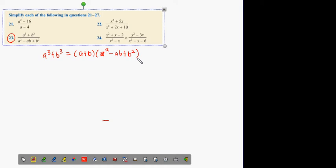Does anybody recognize what this is? It's basically the other half of that. Perfect. So now all we've got to do is divide a squared minus ab plus b squared. Now, what cancels?